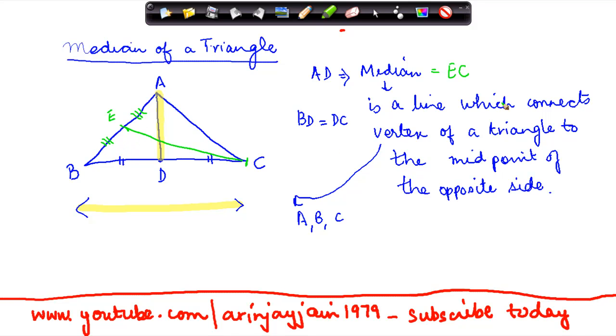Now, accordingly, I can also form another line. Let's say for example, there is a point F here and F divides AC into two equal parts, so that AF is equal to FC, and I join the point B to F here. So BF is also a median of the triangle.